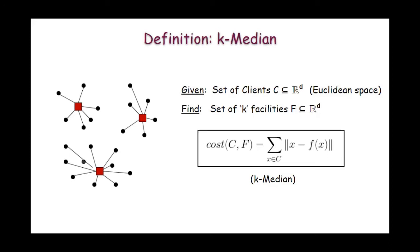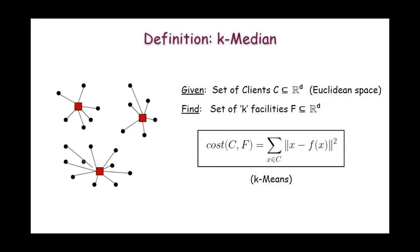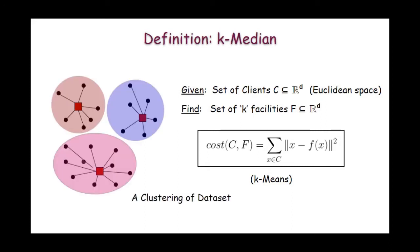A very related cost function to the k-median problem is the k-means cost function, in which we simply take the square distances instead of normal distances, and this also gives the clustering of the entire data set.